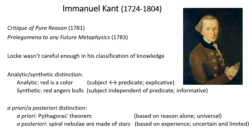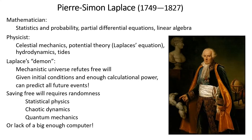Kant was also very careful to distinguish between a priori and a posteriori reasoning. A priori means based on reason alone, from first principles and universal — like Pythagoras' theorem. A posteriori, for example, means that spiral nebulae are made of stars — an inference based on experience or observation, and therefore necessarily uncertain or limited.